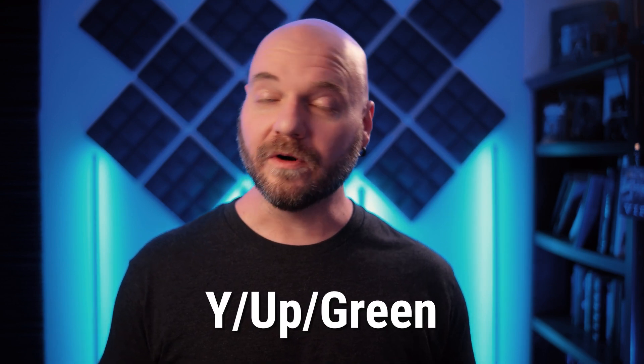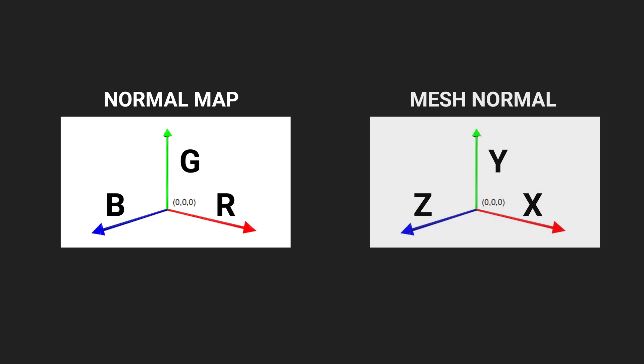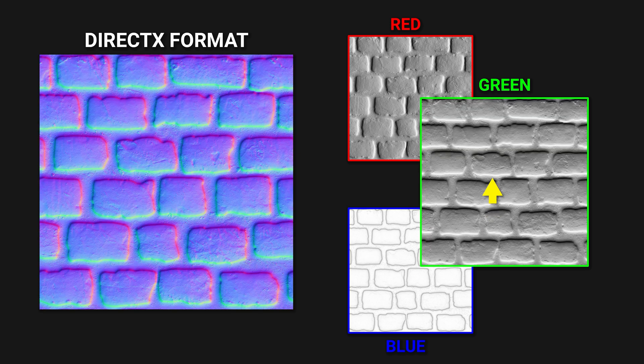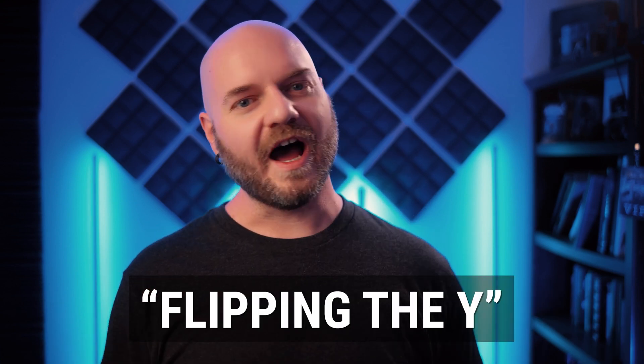Now you know what your normal map should look like in order to render correctly, but you might still ask: what if an asset I'm using has an OpenGL normal map? To solve that, we need to understand what the difference between the two formats is — and that difference is in the Y, or the up direction. In a normal map, the R, G, and B map to the X, Y, and Z. In OpenGL, the lighting information in the Y, or the green channel, is coming from one direction, while in DirectX it's coming from the inverse direction. So you can literally switch formats by just inverting the green channel. In the industry, we call this flipping the Y, or flipping the green.